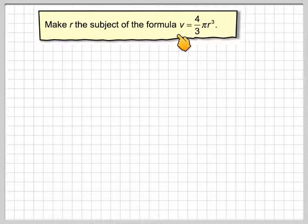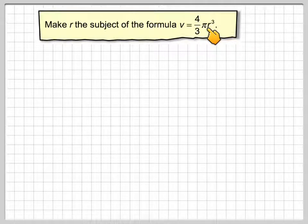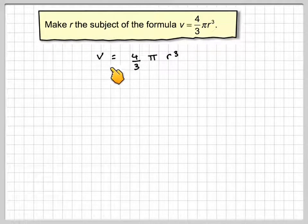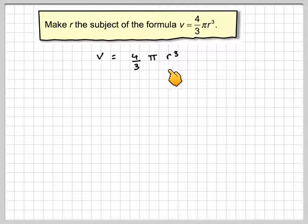Make R the subject of the formula V equals 4/3 pi R cubed. This is the volume of a sphere. Writing out the volume: V equals 4/3 pi R cubed.